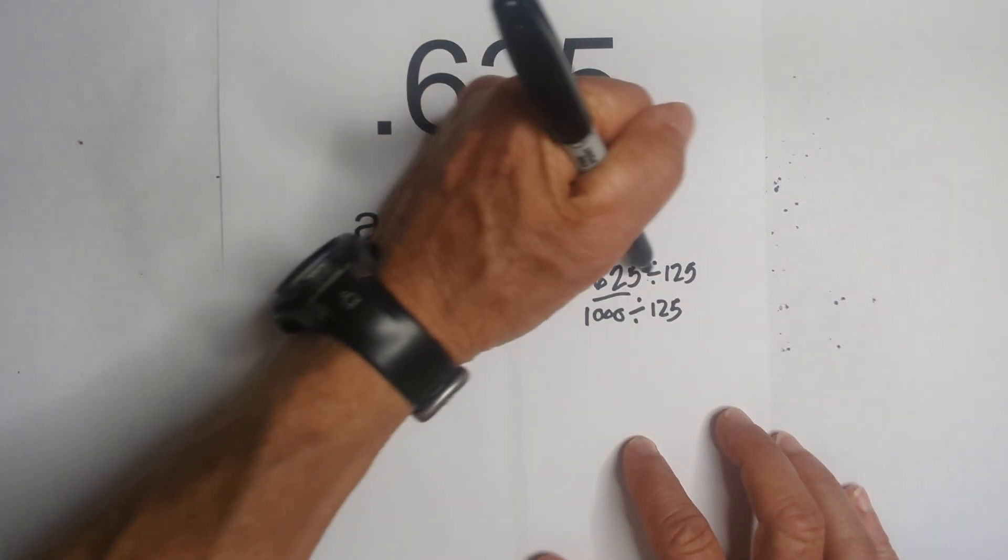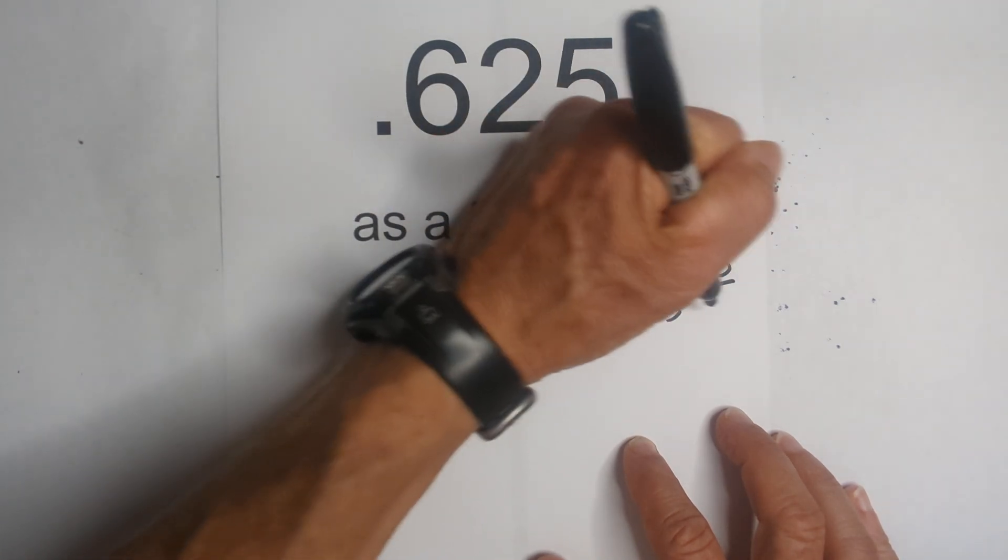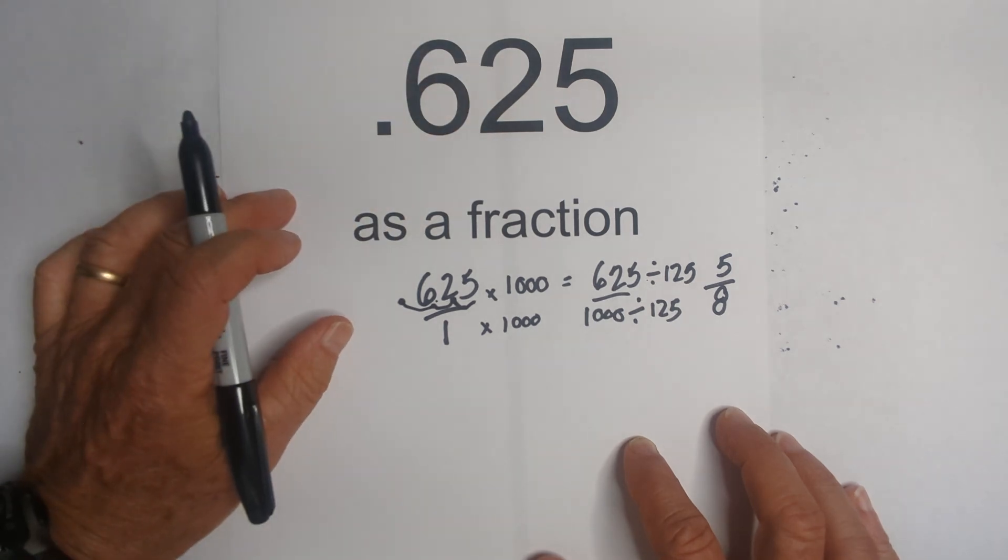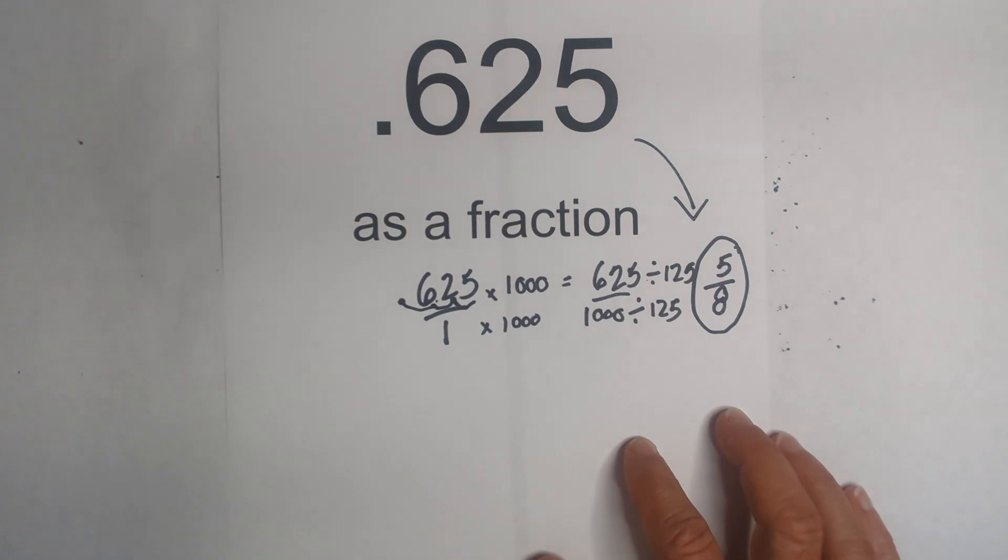And when I do that, 625 divided by 125 is five, and a thousand divided by 125 is eight. So .625 reduced or converted to a fraction is five eighths.